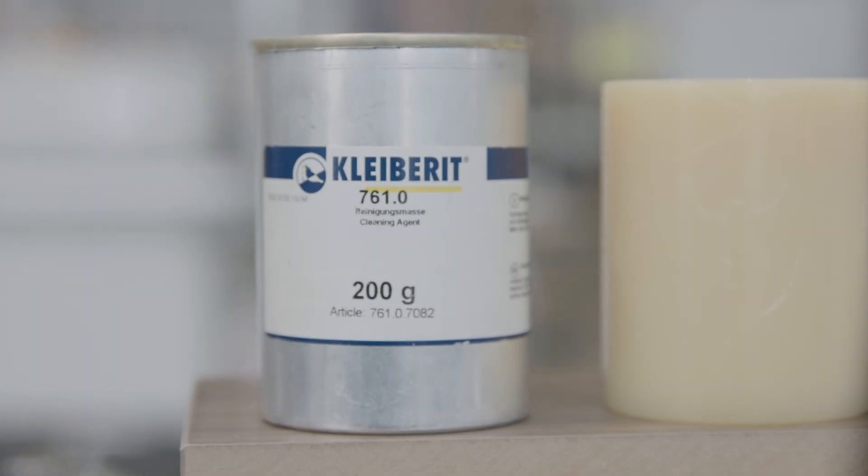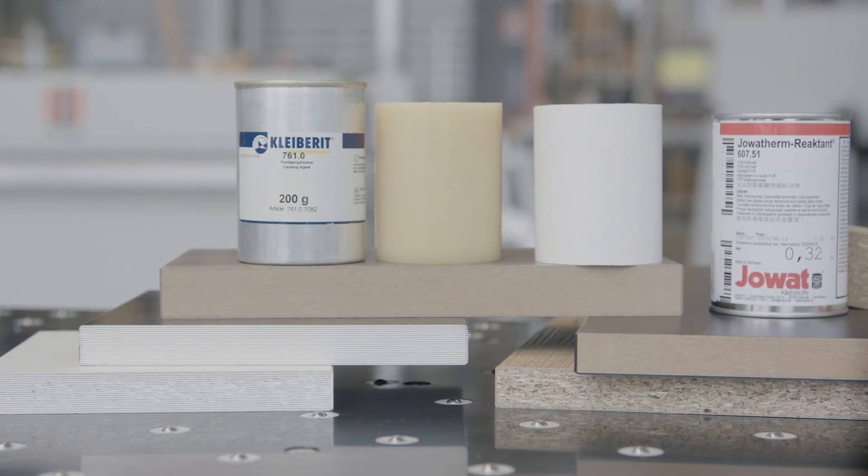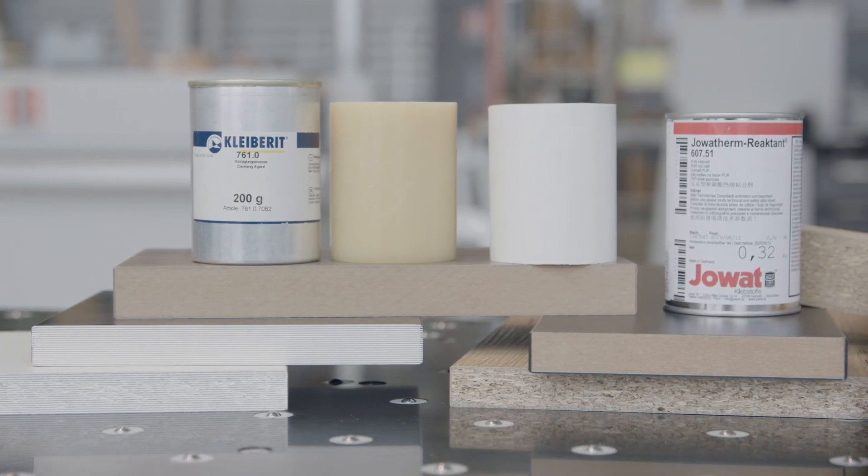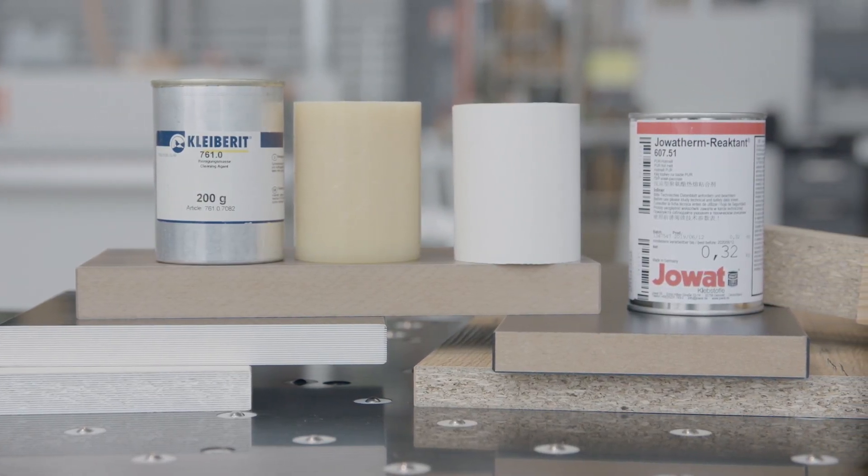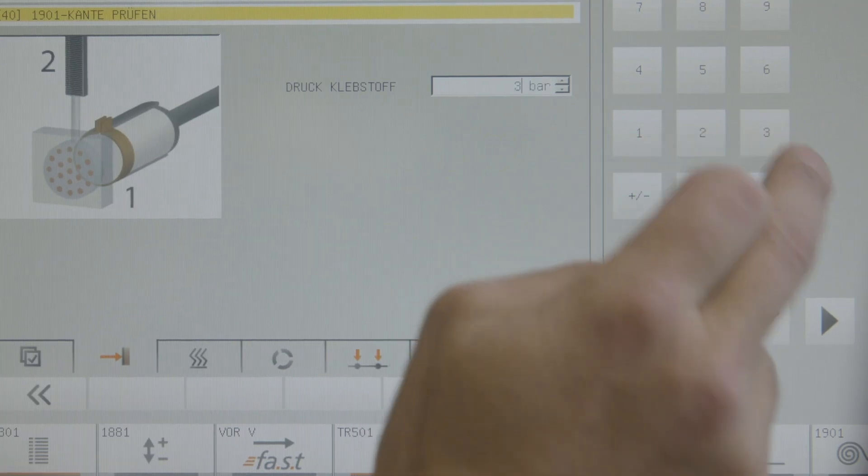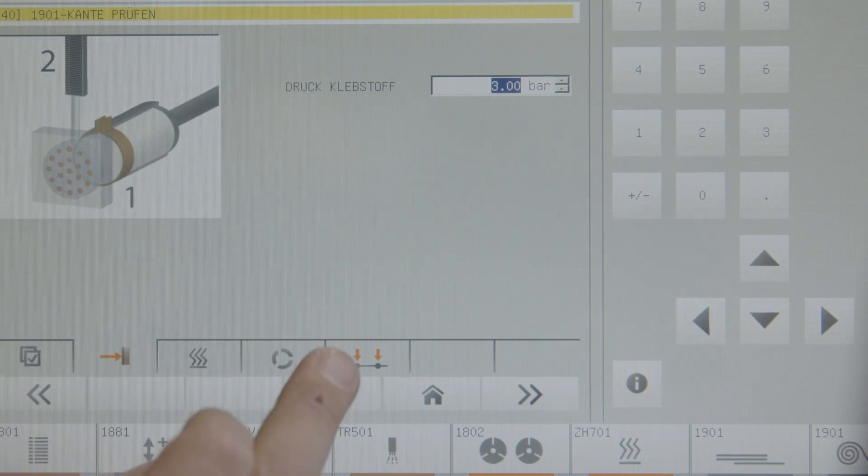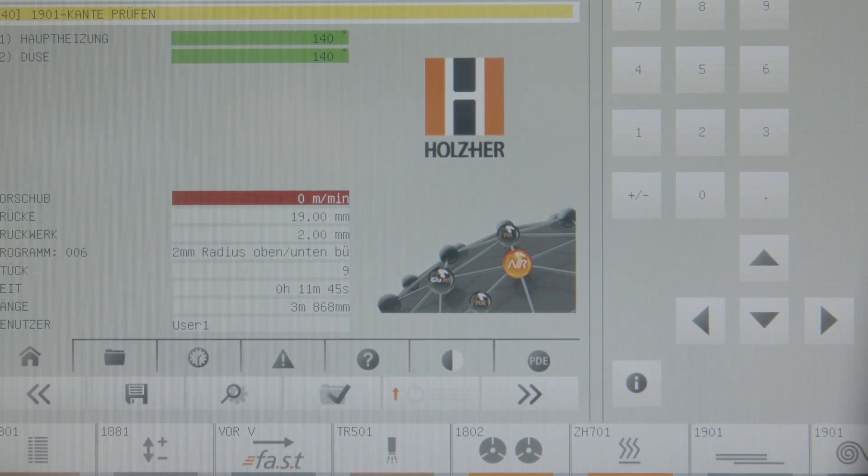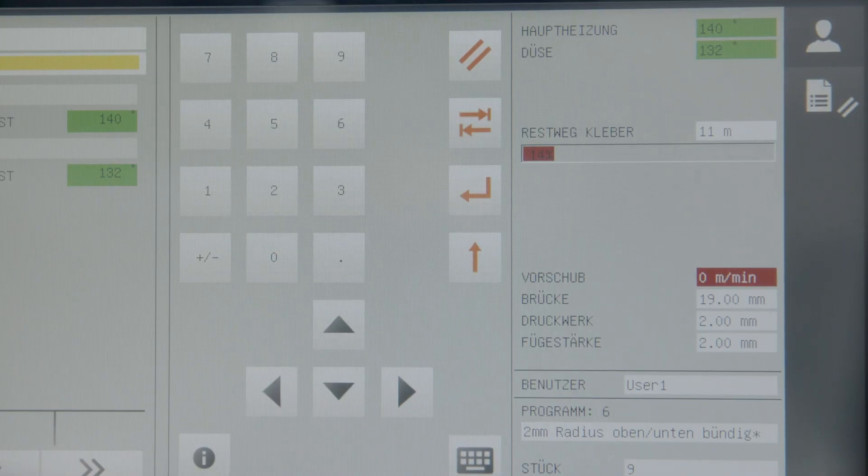With iTronic, an automatic glue quantity control is also available. The amount of adhesive for MDF and chipboard, or for different board thicknesses or types of adhesive, can be perfectly dosed according to requirements. The residual adhesive quantity display shows you what is still possible at any time.